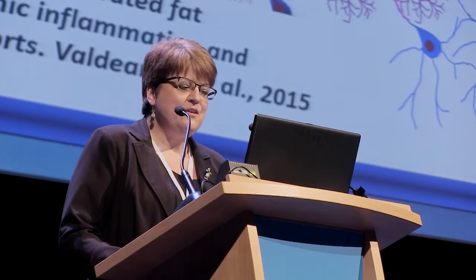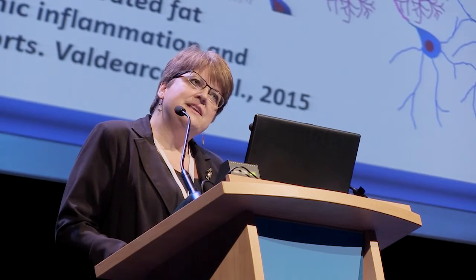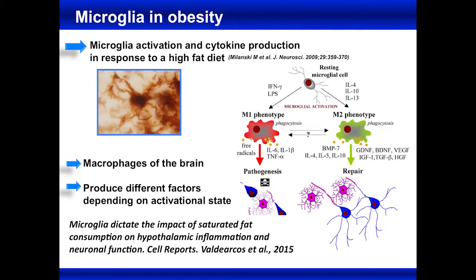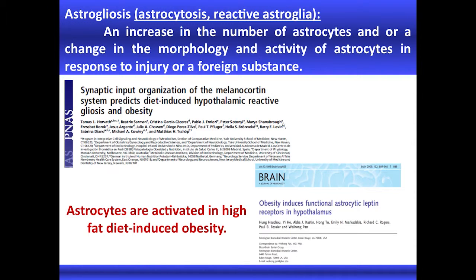A very recent, very nice study came out showing that the microglial response dictates the response to saturated fatty acids, and that microglia are the number one response causing hypothalamic inflammation. But we also know that astrocytes are involved in these responses, and usually when you have hypothalamic inflammation, you also have gliosis.